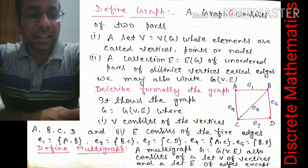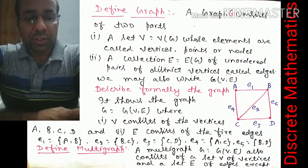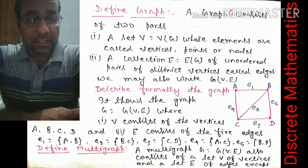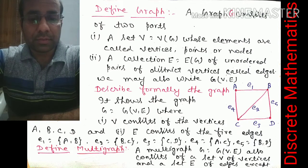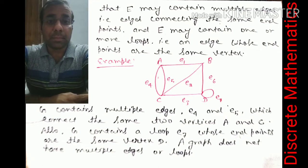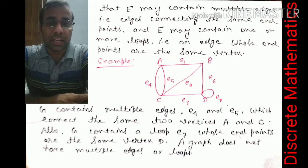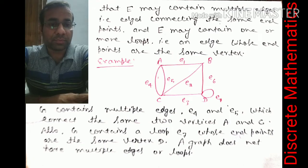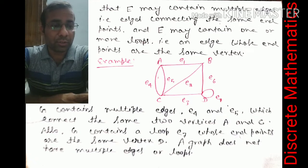Now we will define a multigraph. A multigraph G = G(V, E) also consists of a set V of vertices and a set E of edges, except that E may contain multiple edges connecting the same endpoints, and E may contain one or more loops — that is, an edge whose endpoints are the same vertex. For example, vertices A, B, C, D where e4 and e5 connect the same two vertices A and C, and e7 is a loop whose endpoints are the same vertex D.